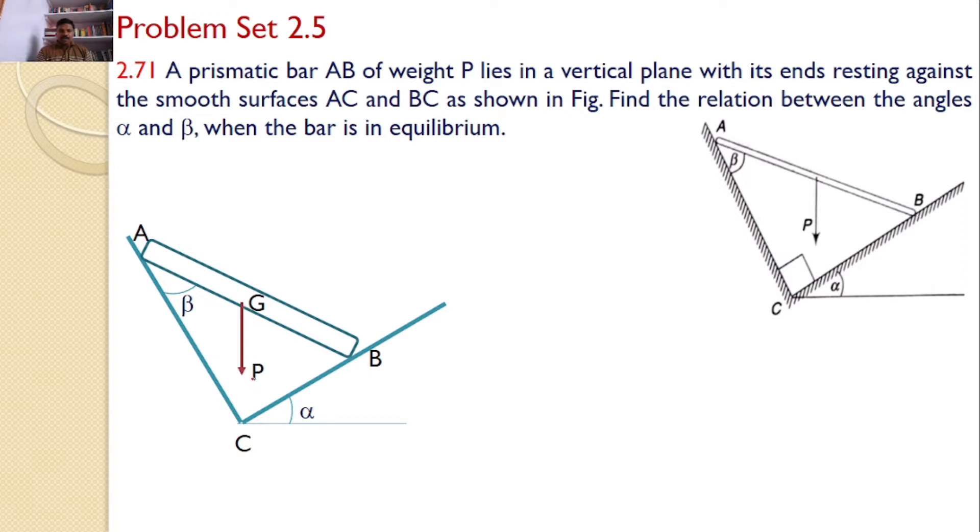The weight of the bar is P. The BC surface makes an angle alpha with the horizontal, as given. And the bar AB makes an angle beta with the surface AC as given in the problem.